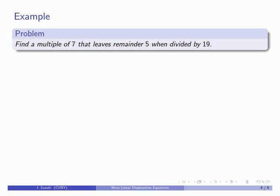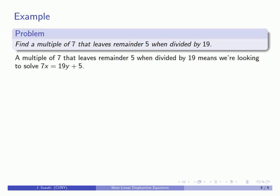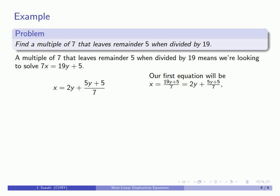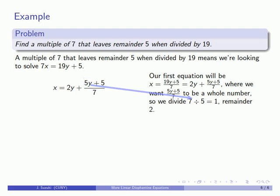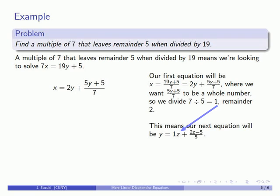Let's try it out. Say we want to find a multiple of 7 that leaves remainder 5 when divided by 19. That means we're looking for 7x to equal 19y plus 5. Dividing through by 7 gives x equals (19y + 5) / 7, which reduces to 2y plus (5y + 5) / 7. There's my first equation. I want (5y + 5) / 7 to be a whole number, so I divide 7 by 5 to get 1 with remainder 2. That tells me the next equation is y equals 1·z plus (2z minus 5) / 5.